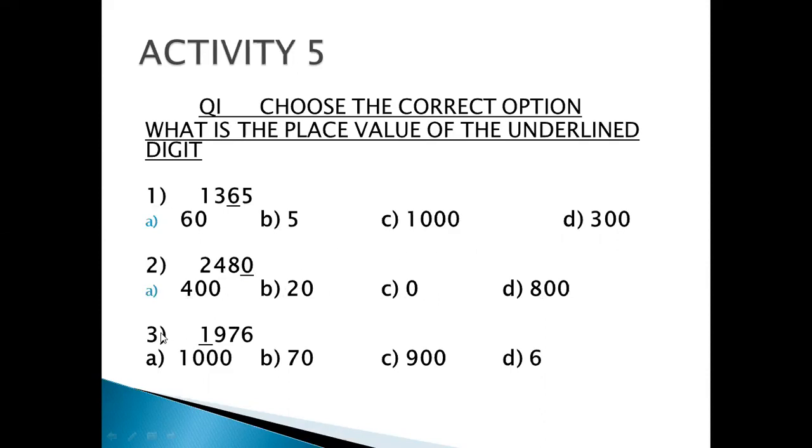Your third one is 1976. Option A is 1000, option B is 70, option C is 900 and option D is 6. So you either circle the correct answer or you can also put a tick for the correct answer.